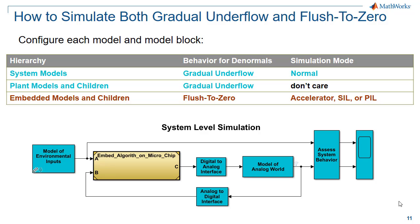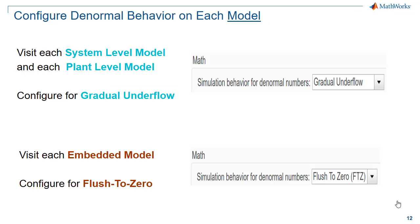Let's now describe how to simulate with both gradual underflow and flush to zero. To do this, you need to configure each model and model block in your system-level hierarchy. For system models, you want gradual underflow and normal mode simulation. For plant models and their children, you also want gradual underflow. For embedded models and their children, you want flush to zero, and you want simulation mode to be accelerator, SIL, or PIL. To set the denormal behavior, visit all the system-level models and all the plant-level models and set their math mode to gradual underflow. You also need to visit all the embedded models and set their math mode to flush to zero.